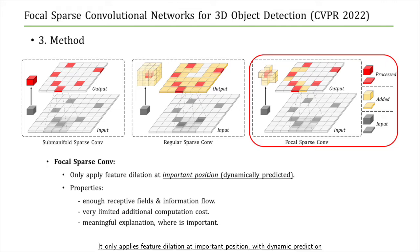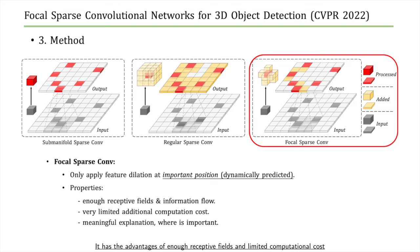Focal sparse convolution only applies feature dilation at important positions with dynamic prediction. It has the advantages of enough receptive fields and limited computational cost. In addition, it provides meaningful explanation and visualization on the important positions in each scene.